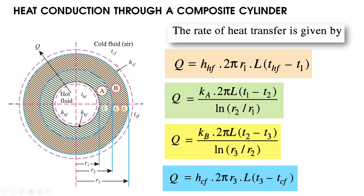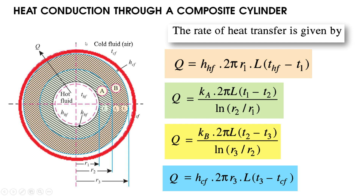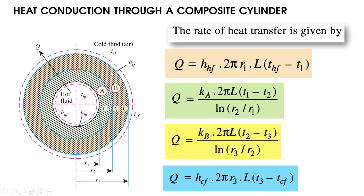At the outer surface of layer B and the atmospheric air, convection takes place, following Newton's law of cooling: Q = h·A·ΔT. Here h is H_cf (heat transfer coefficient for cold fluid), and the convection takes place through the outer periphery of layer B, so the area is 2πr₃·L. The temperature difference is T3 minus T_cf, where T_cf is the cold fluid (atmospheric air) temperature and T3 is the temperature of the outer surface of layer B.